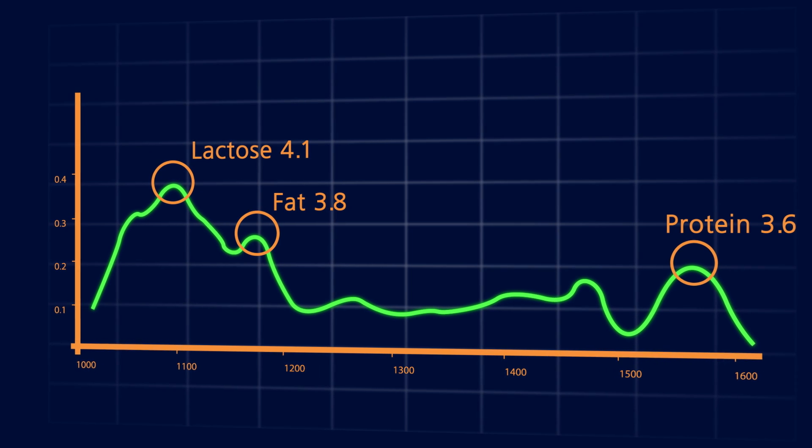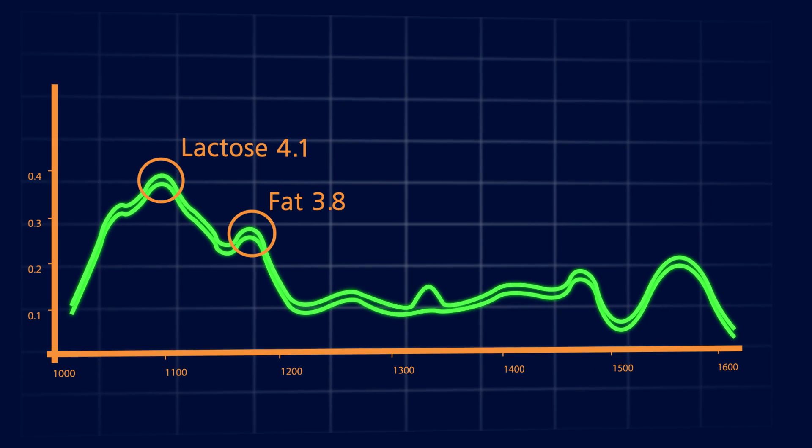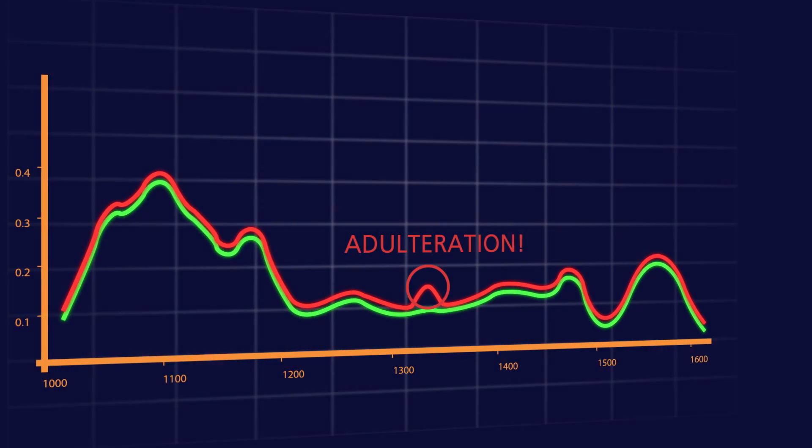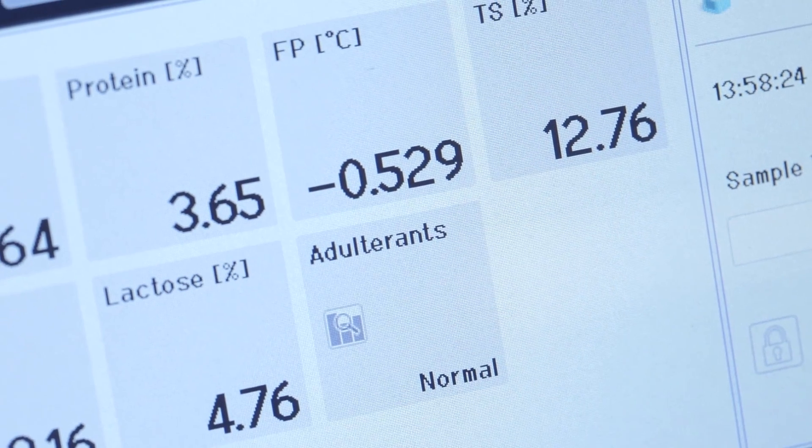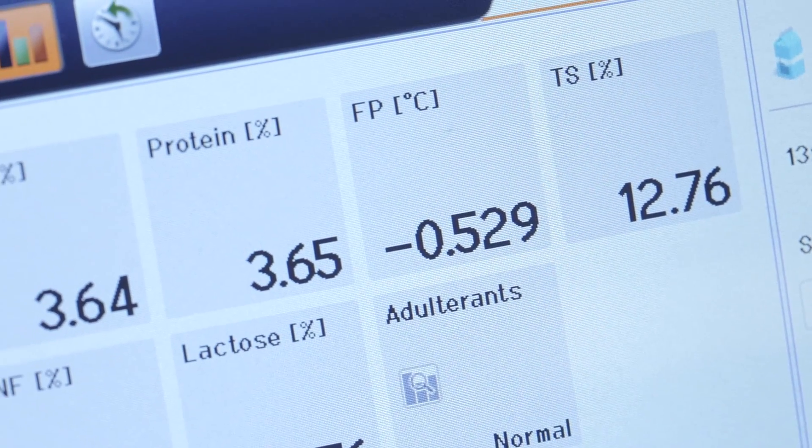A milk sample is tested against a profile for normal milk. A warning is given if there is a mismatch. Adulteration screening options allow you to check milk for abnormalities such as known or unknown adulterants and added water.